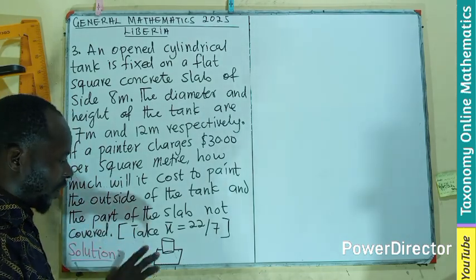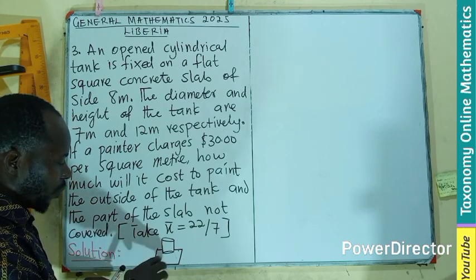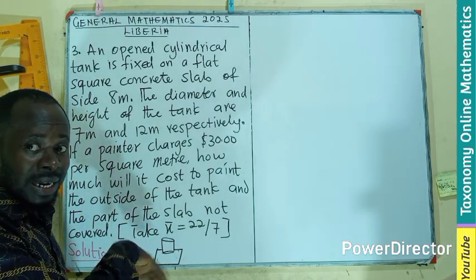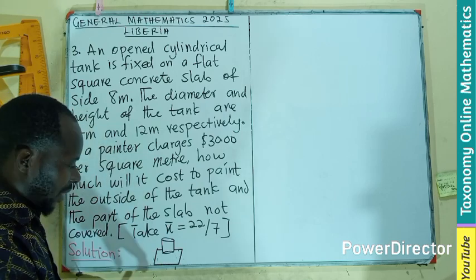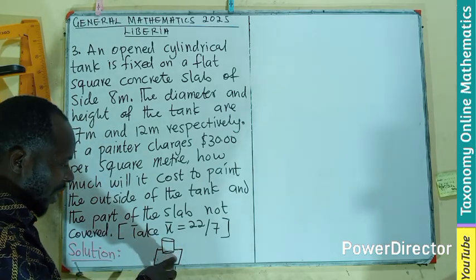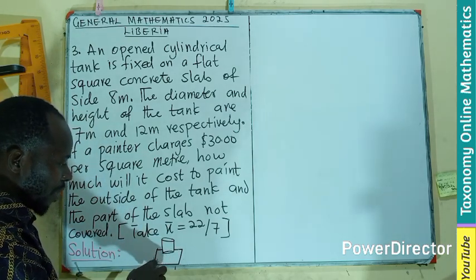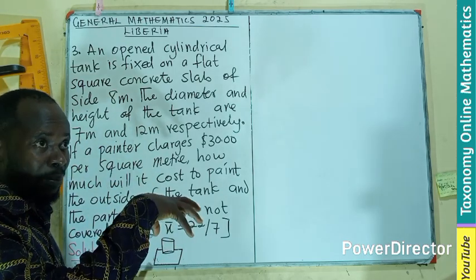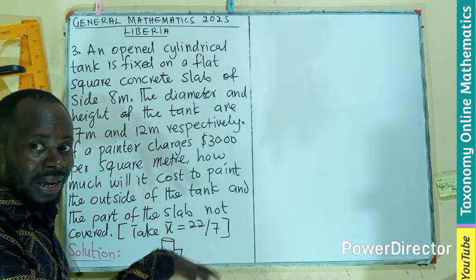If you're going to paint this, you're going to paint the whole of the cylinder. Then you're going to paint the areas here also, but you will not be painting where the cylinder will be sitting on. So that particular area will also not be covered.